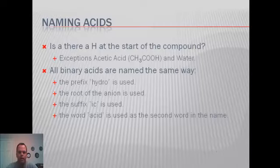Now if you have hydrogen bonded to an element, you'll put the prefix hydro, the root of the anion, so if it were chlorine, you'd put chloro, the suffix IC, and then the word acid.